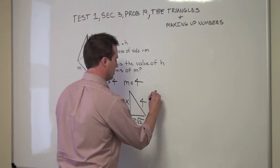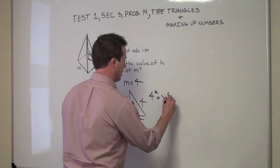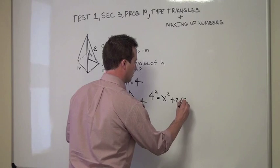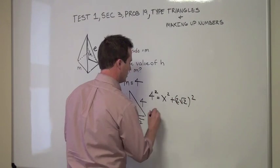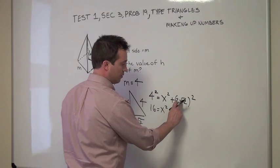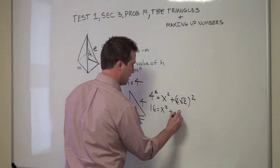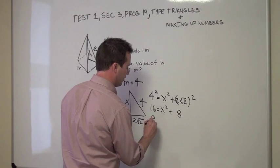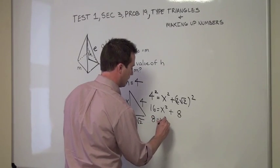So here we would have 4 squared equals x squared plus 2 root 2 squared, so we get 16 equals x squared plus, and this would be 2 squared is 4 times 2 is 8, and now we can subtract 8 from both sides and say 8 is equal to x squared.